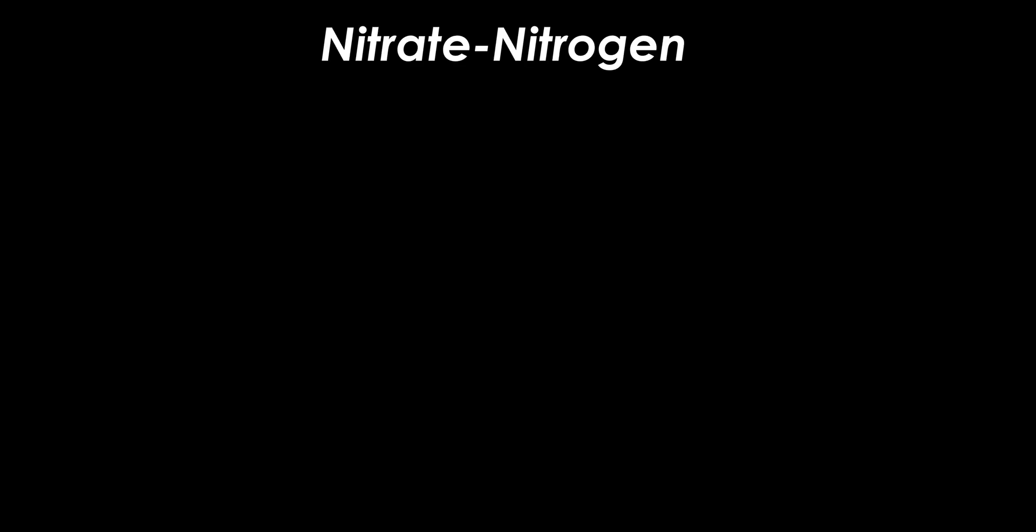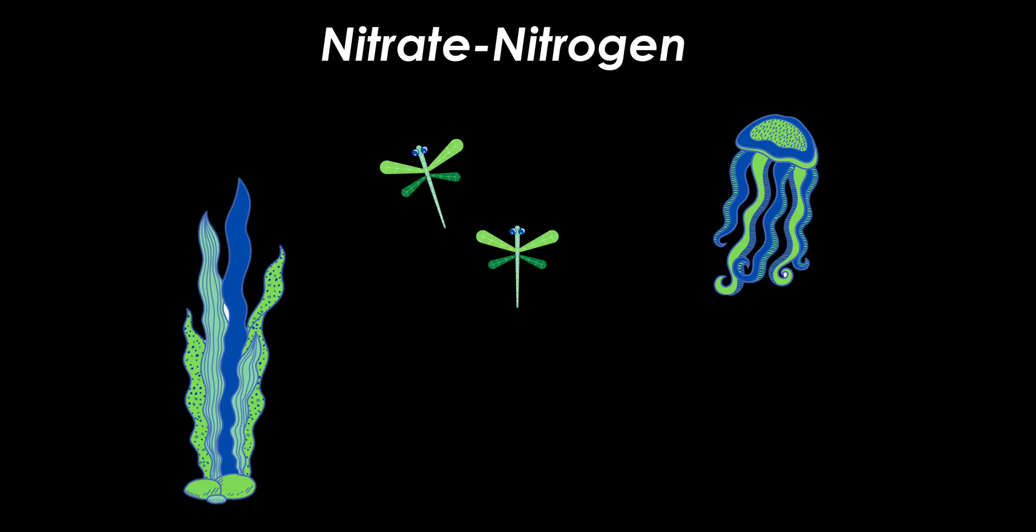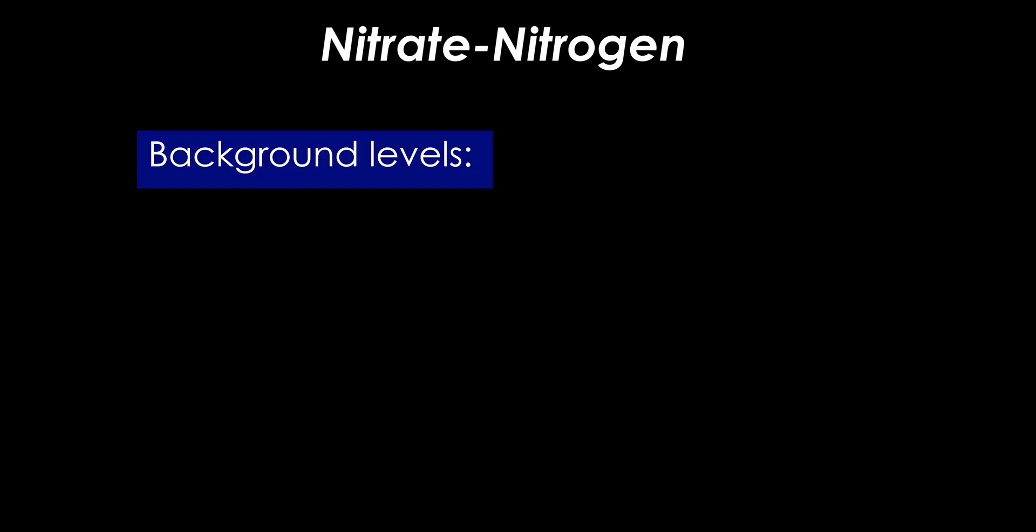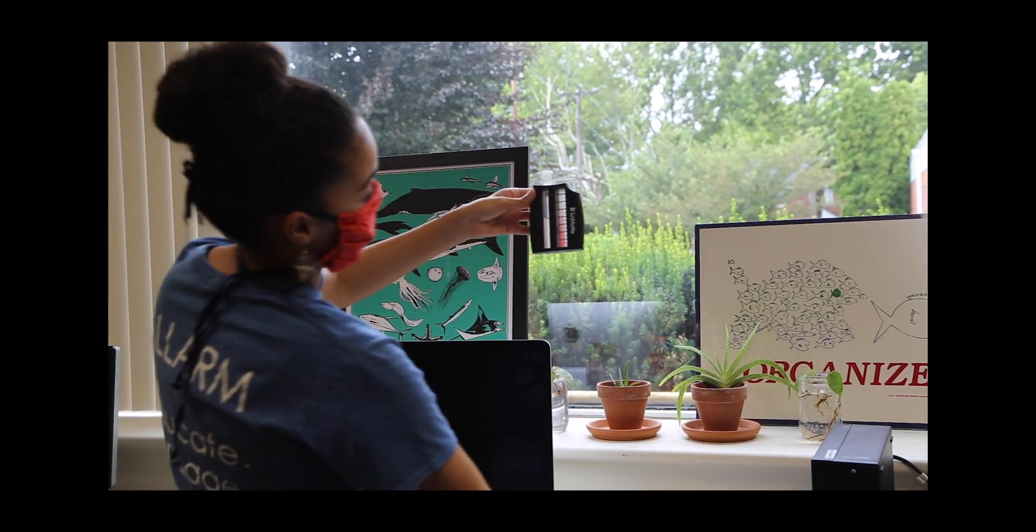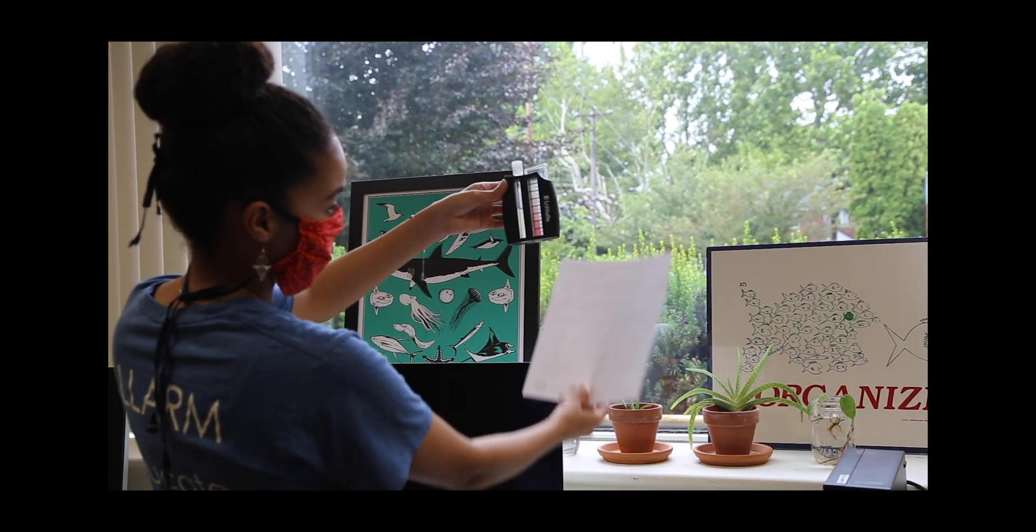Nitrate-nitrogen is a vital nutrient for aquatic biota, however, in excess it can be problematic. Background levels of nitrate in streams is one part per million or one milligram per liter. Stream Team tests streams for nitrate to establish a baseline understanding of nutrients in your waterways.